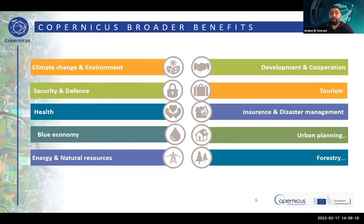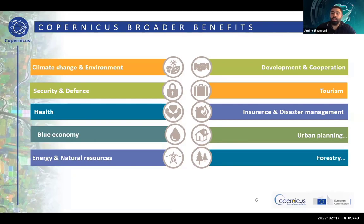The Copernicus data has broad benefits. For example, on the agriculture theme, it can be interesting for monitoring soil moisture and surface temperature. It can address the issues of climate change, such as observing sea level rise and ice melting, using satellite data. It can also be used for the health sector for monitoring air quality, security and defense, transport, development and cooperation, and so on.